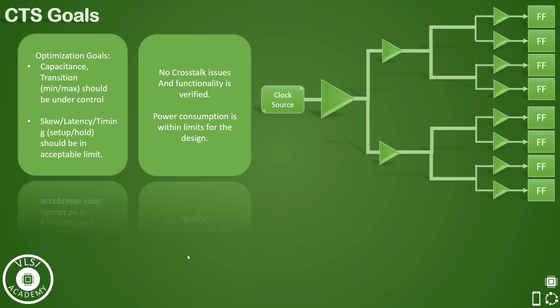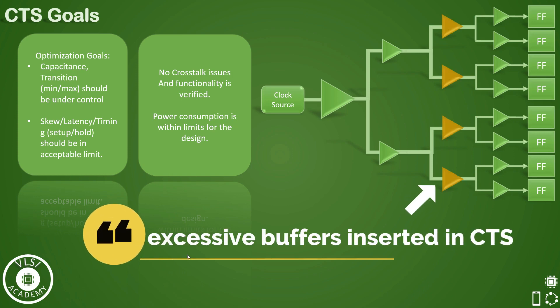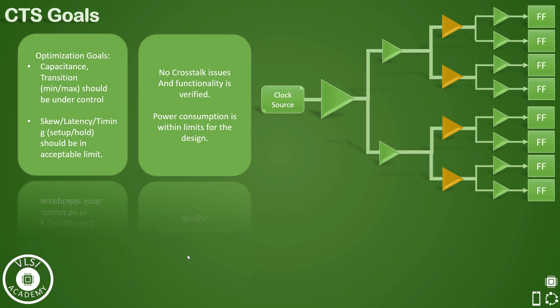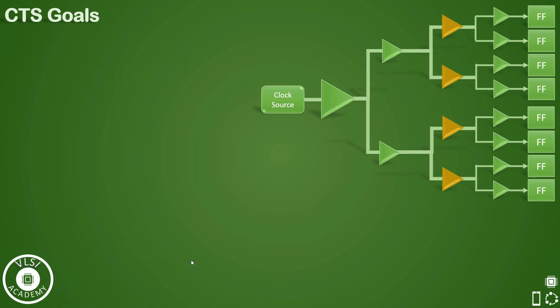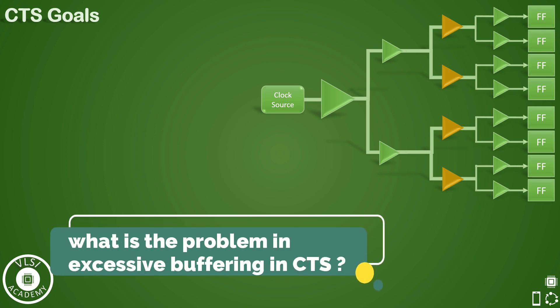Hence, if somehow tool has inserted more buffers than needed in order to meet certain targets, then there is a possibility of more power consumption, which is bad for overall design. Now the first question is, what is the problem in excessive buffering during CTS?